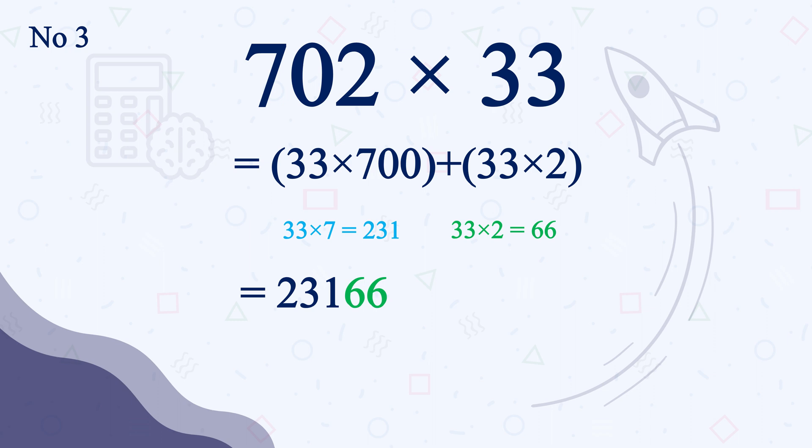Do you understand how I did it? Look, 7 times 33 is 231 but we actually needed 700 times 33 not 7 times of 33, right? So we had to put 00 at the end.